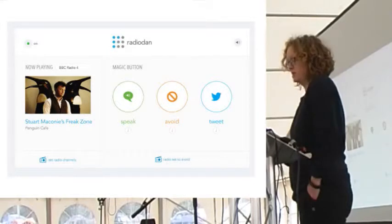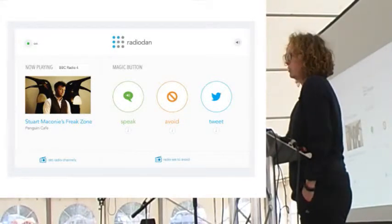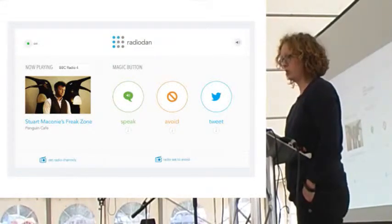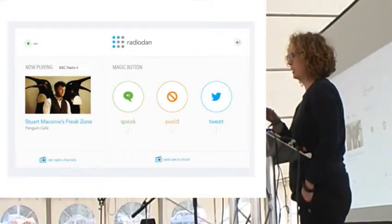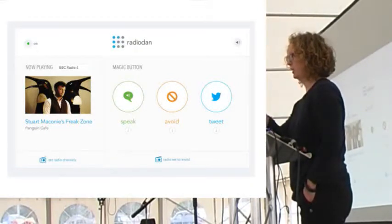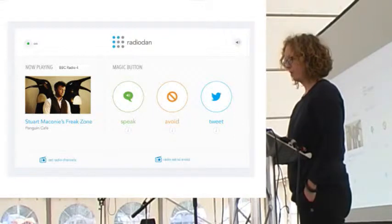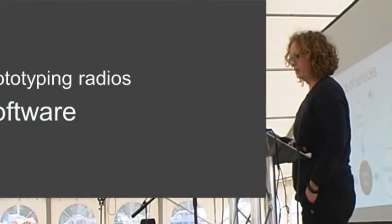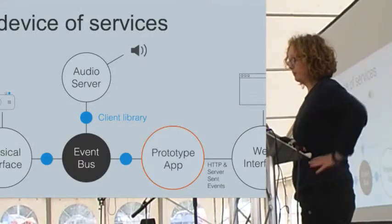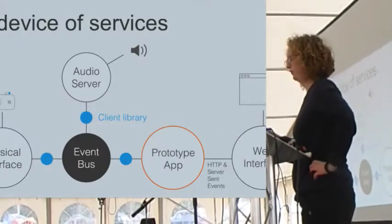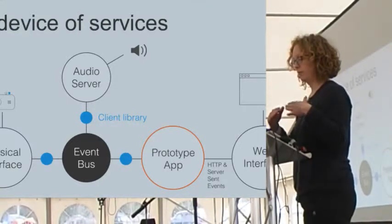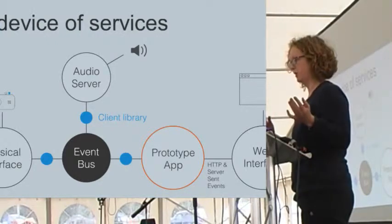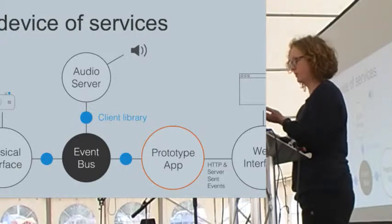And you can also avoid specific tunes, for example, that you don't like. The other one is speak, so we're very interested in accessibility. This seems like a really interesting opportunity to try and do something with it. The initial thing is you can set it so that when you press the button, it tells you what's playing at the moment. So, underlying it, we've basically got RabbitMQ running, so an event bus, so that changes in the physical interface are reflected in the web interface and vice versa. And you can have multiple, you can access the web interface from multiple different devices and so on.